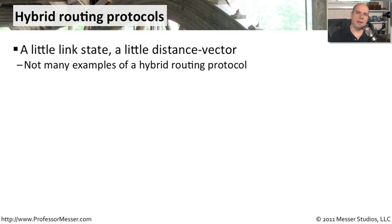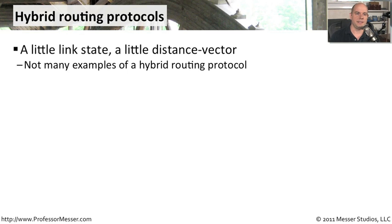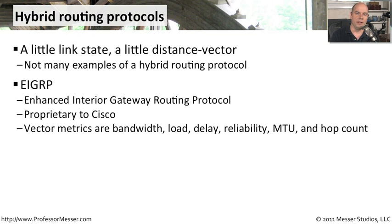Like the name sounds, a hybrid routing protocol is a little bit of distance vector and a little bit of link state. You blend a lot of those things together to come up with something that takes into account many different metrics in order to make its decisions. A good example of this is EIGRP, the Enhanced Interior Gateway Routing Protocol. It is a Cisco proprietary protocol, and being a hybrid protocol means that it takes into account a lot of different metrics.